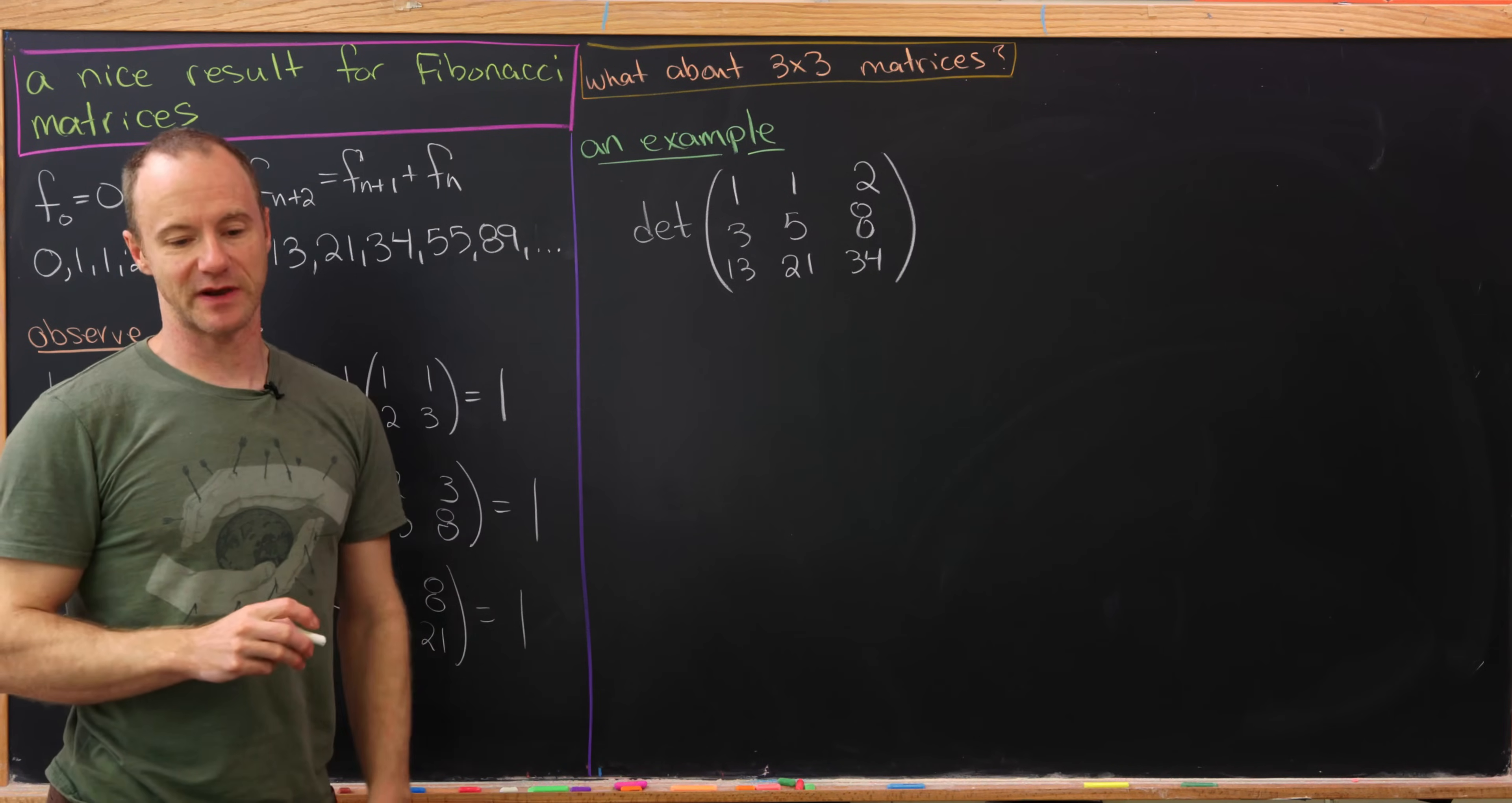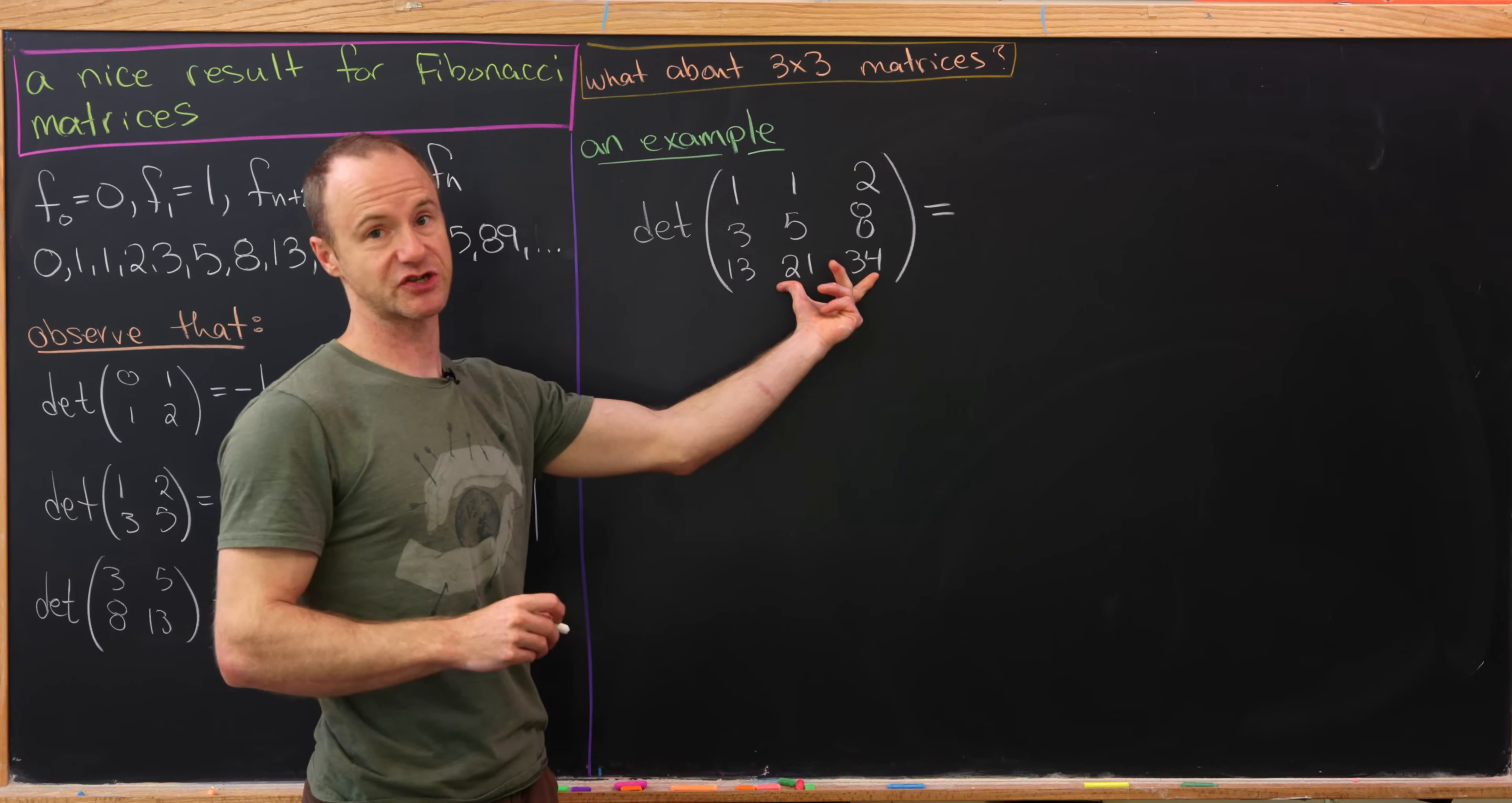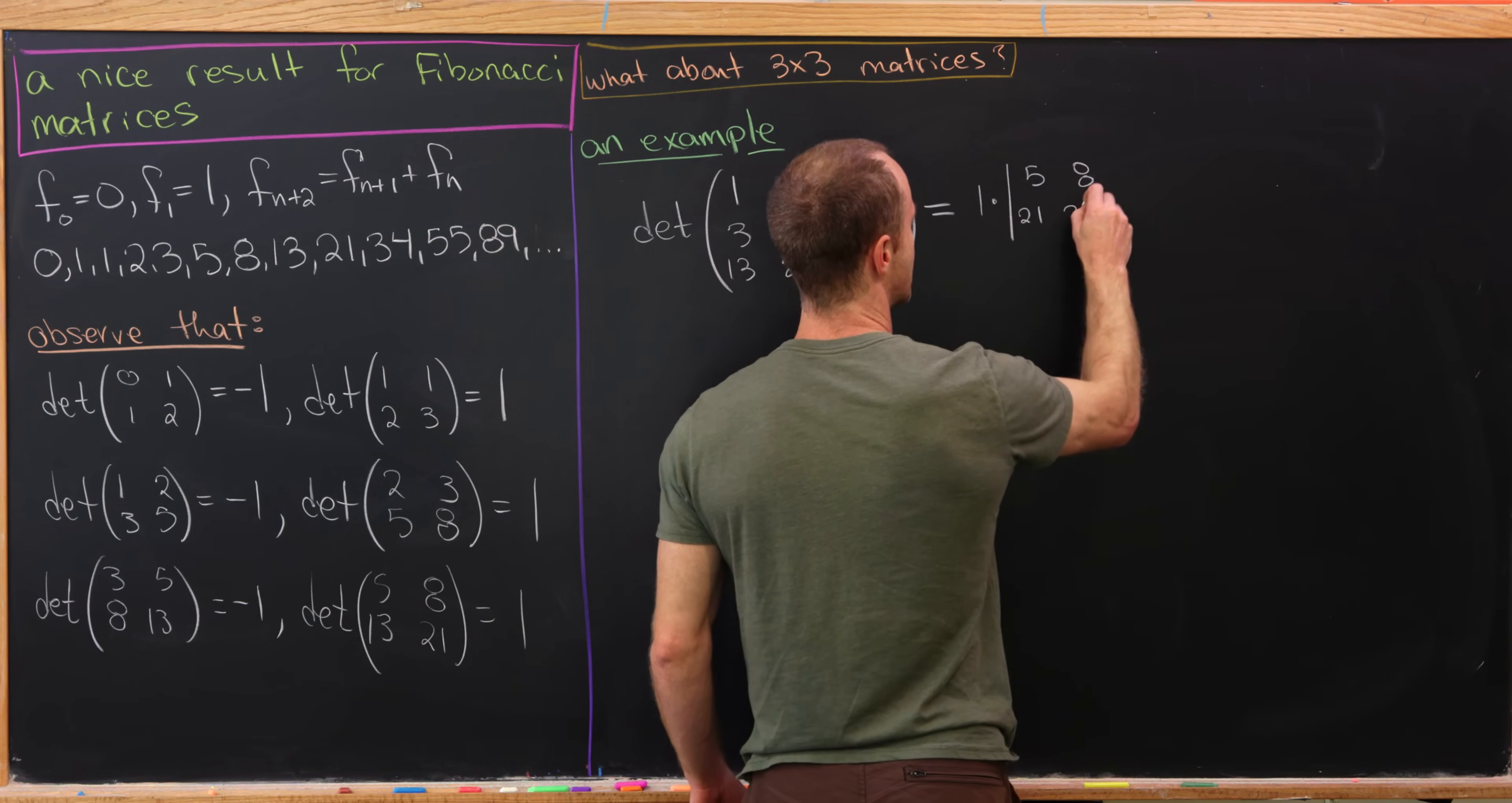So let's do that determinant calculation and see what happens. Well, we're going to do the so-called cofactor expansion in order to calculate this. So what is that? Well, we're going to do a cross with the first row and the first column. And we'll get a submatrix here, a 2 by 2 submatrix. And we're going to multiply the determinant of that 2 by 2 submatrix with what got crossed. So here we'll have 1 times the determinant of the matrix 5, 8, 21, 34.